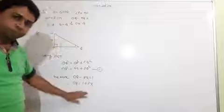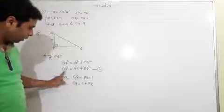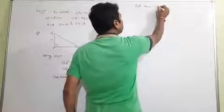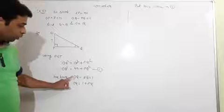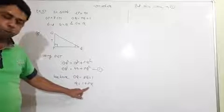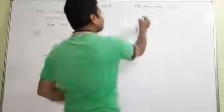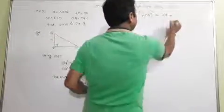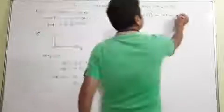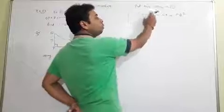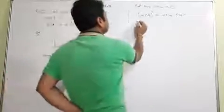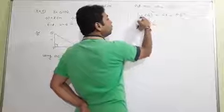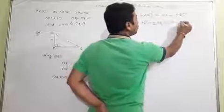I will substitute OQ with 1 plus PQ in equation 1. So OQ squared becomes 1 plus PQ whole square, equal to 49 plus PQ squared. Opening using A plus B whole square: it is A squared plus B squared plus 2AB, meaning 1 plus PQ squared plus 2 times 1 times PQ, equal to 49 plus PQ squared.